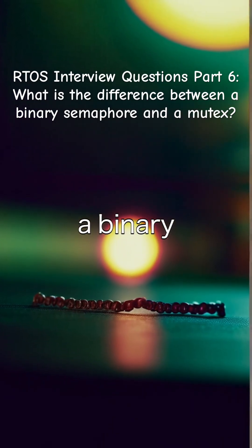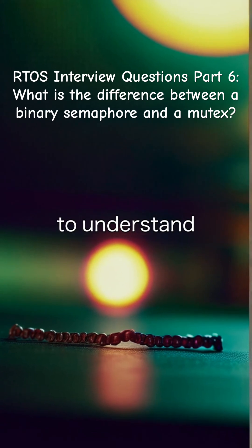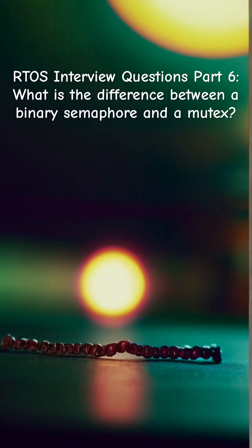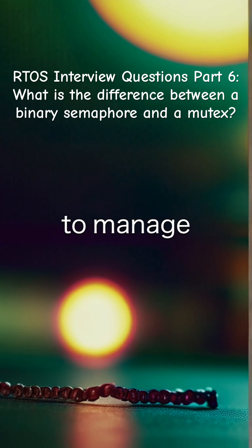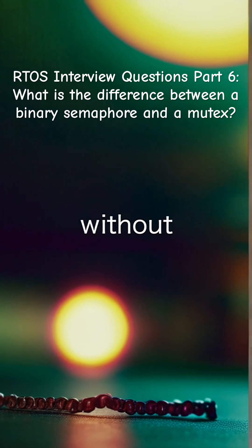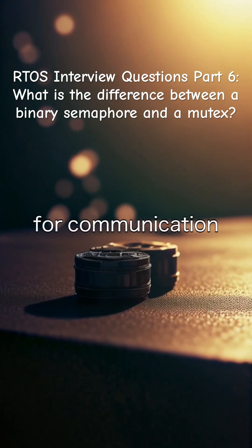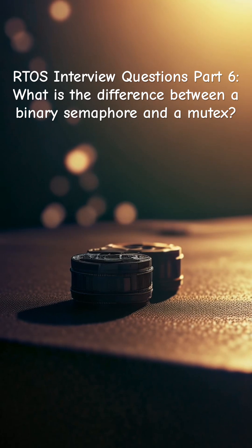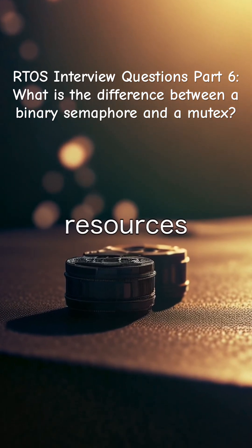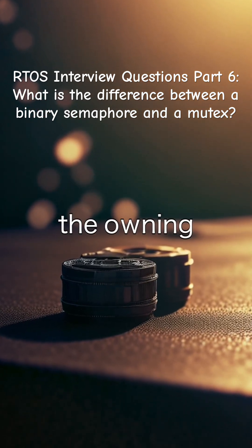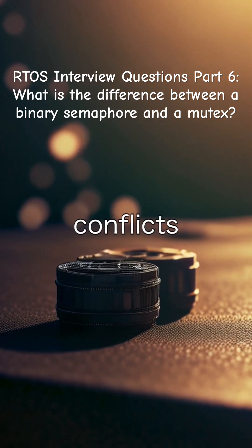When choosing between a binary semaphore and a mutex, it's essential to understand their intended uses and behaviors. Binary semaphores allow multiple tasks to manage signals without ownership restrictions, making them ideal for communication. In contrast, mutexes strictly maintain control over shared resources, ensuring that only the owning task can modify the resource, thus preventing conflicts.